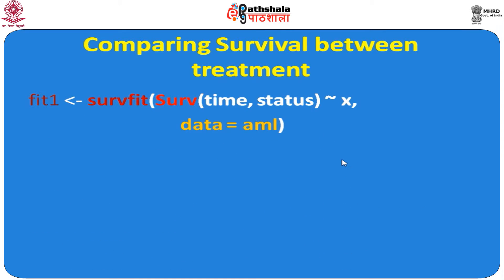To compare survival between treatments, we use the survfit() function. Inside the parentheses, we specify Surv(time, status) and as the covariate of interest we use the variable X, where X is a string variable for maintained and non-maintained therapy. We set data = aml. Once we call summary(fit), we get detailed inference about the data, shown in the next slide.